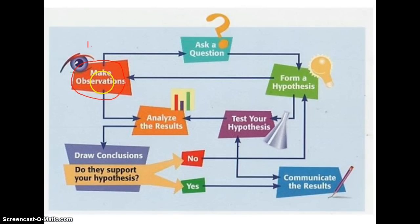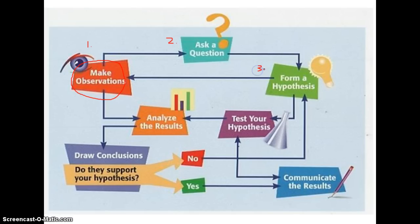All of that wondering and all of those observations lead to the second step of the scientific method, where hopefully you're not just observing things but actually asking why you're observing them, where they're coming from, why a certain event is taking place. Asking questions makes a fantastic scientist. In fact, science is less about finding answers and more about asking questions. Once you have a question in mind, the third step is forming what we call a hypothesis. A lot of people say a hypothesis is an educated guess, but I don't like that so much.